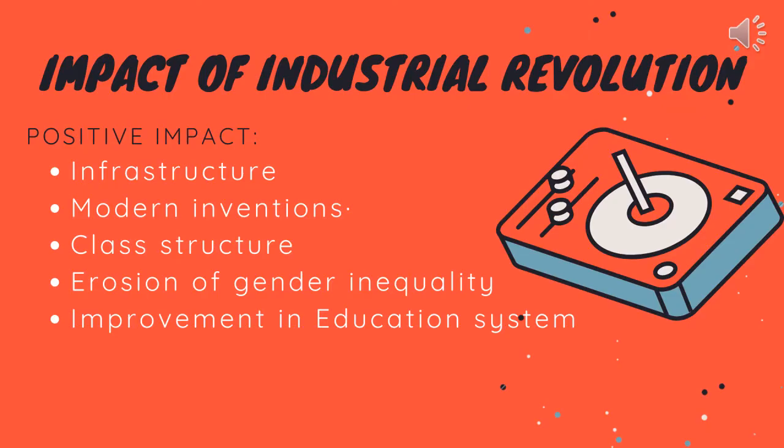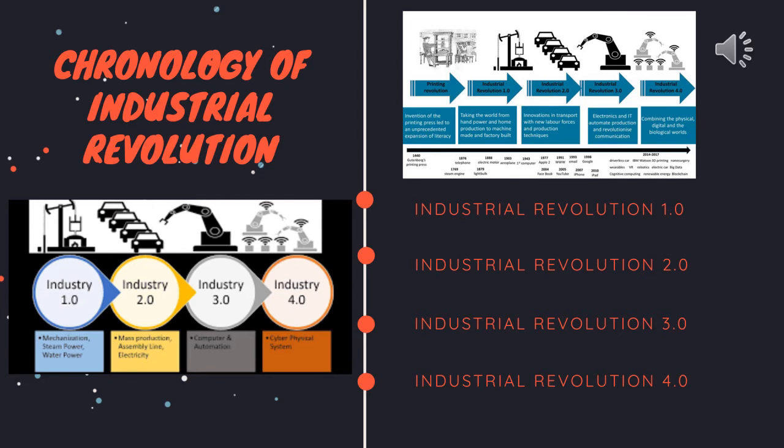The positive impacts of the Industrial Revolution can be seen from infrastructure, modern invention, class structure, erosion of gender inequality and improvement in the education system. The last slide is the chronology of the Industrial Revolution.